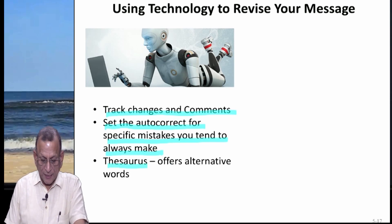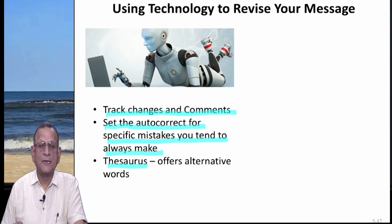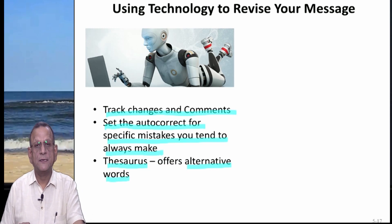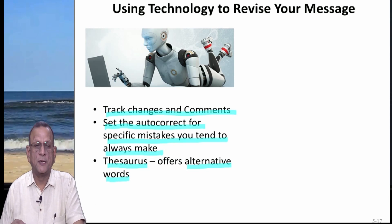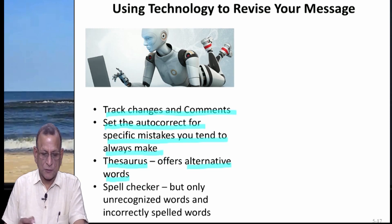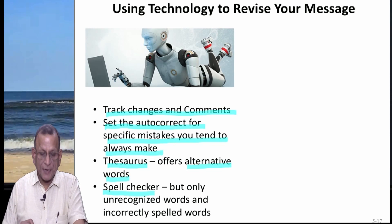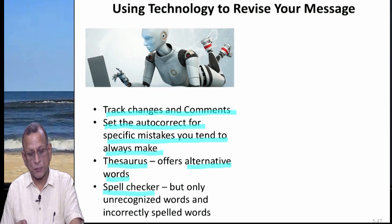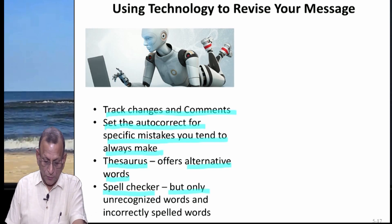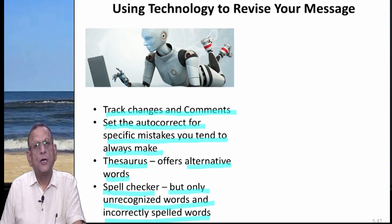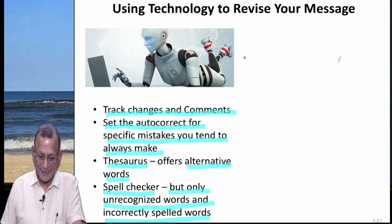Then we have something known as thesaurus. The thesaurus is in a position to provide alternative words to us. If I am not in a position to find an easy word for something, then the thesaurus may be in a position to help me find that easy word. And then we have a spell checker, but the spell checker will only recognize words available in the dictionary — only unrecognized or incorrectly spelled words will be highlighted. So this spell checker cannot be relied upon to that extent.